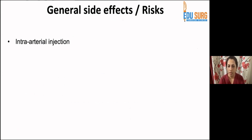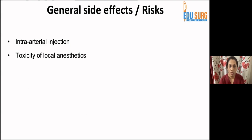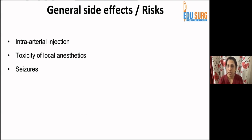Intra-arterial injection is quite possible, especially with blind techniques, since nerves are always adjacent to vessels. Always aspirate before injecting. Accidental intra-arterial injection will cause local anesthetic toxicity. Inject in smaller aliquots and confirm you are not injecting into a blood vessel. Common presentations of toxicity include seizures, perioral numbness, and twitching — always suspect intravascular injection if these occur.